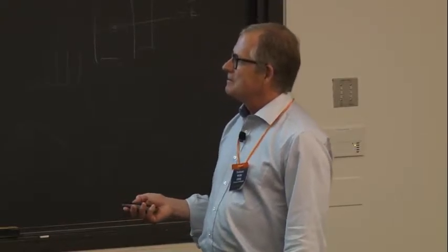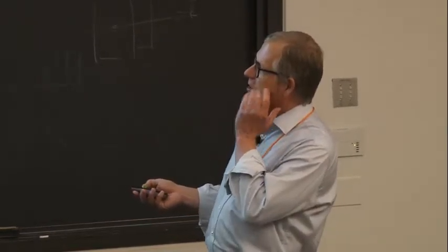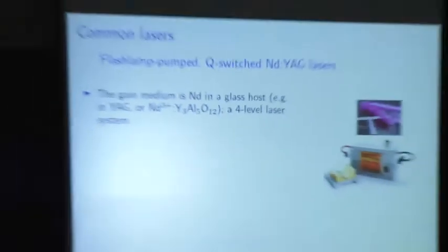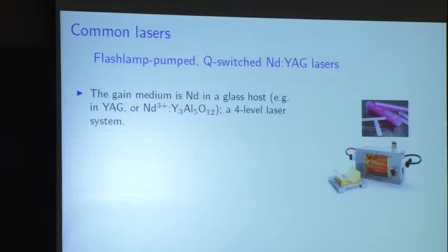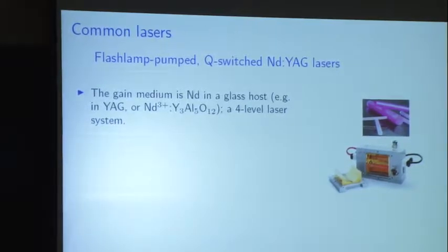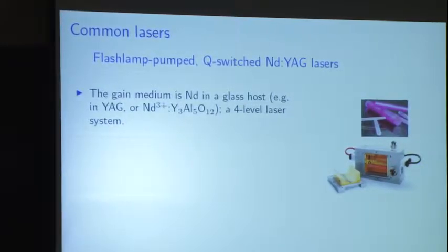Let's talk about flash lamp pumped Q-switched YAG lasers. When I worked at Spectrophysics, one of my first jobs was with the Quant-Array. These are YAG laser rods — neodymium in a glass host. YAG is yttrium aluminum garnet. There are other hosts: neodymium YLF — yttrium lanthanum fluoride, called YULF — actually has a longer fluorescence lifetime, which means you can store more gain in the upper level. Why don't we always use YULF? It can be eroded by water and is softer than YAG. There's also neodymium vanadate, which has a very long excited state lifetime. YAG is not the only available host, but yttrium aluminum garnet is a very tough glass, which is nice.